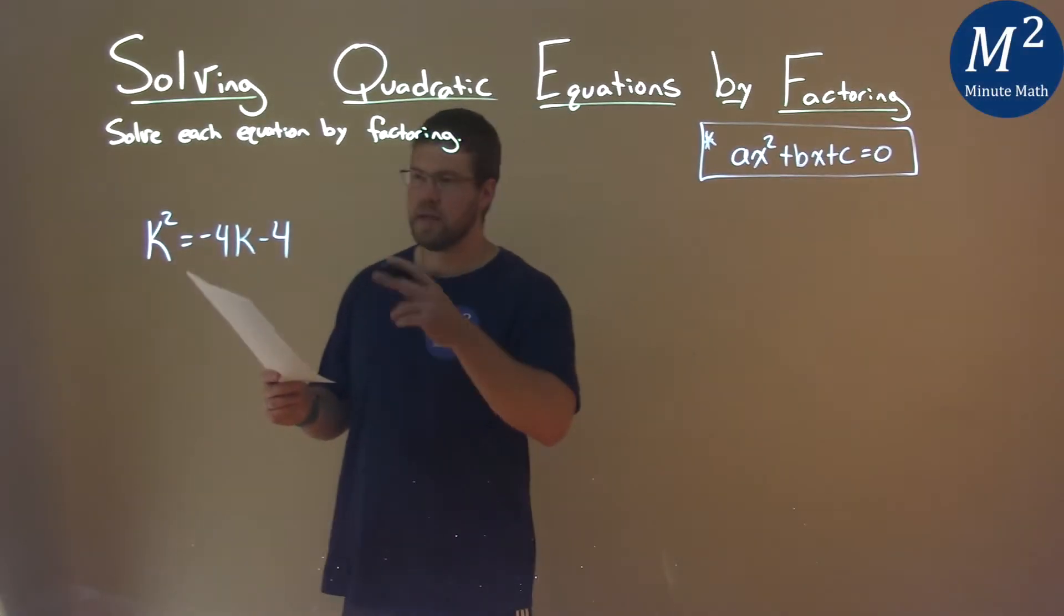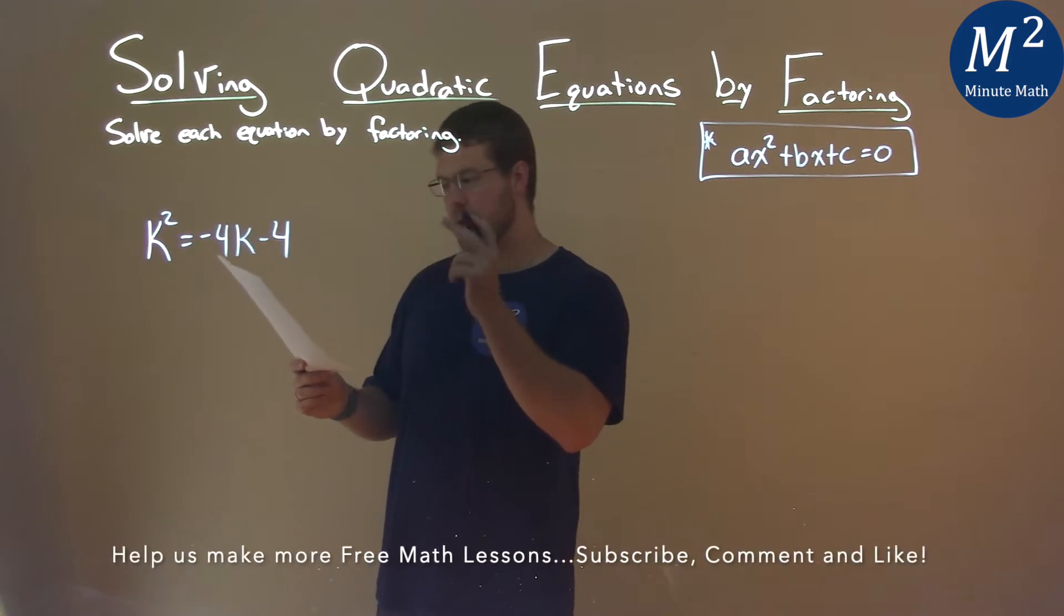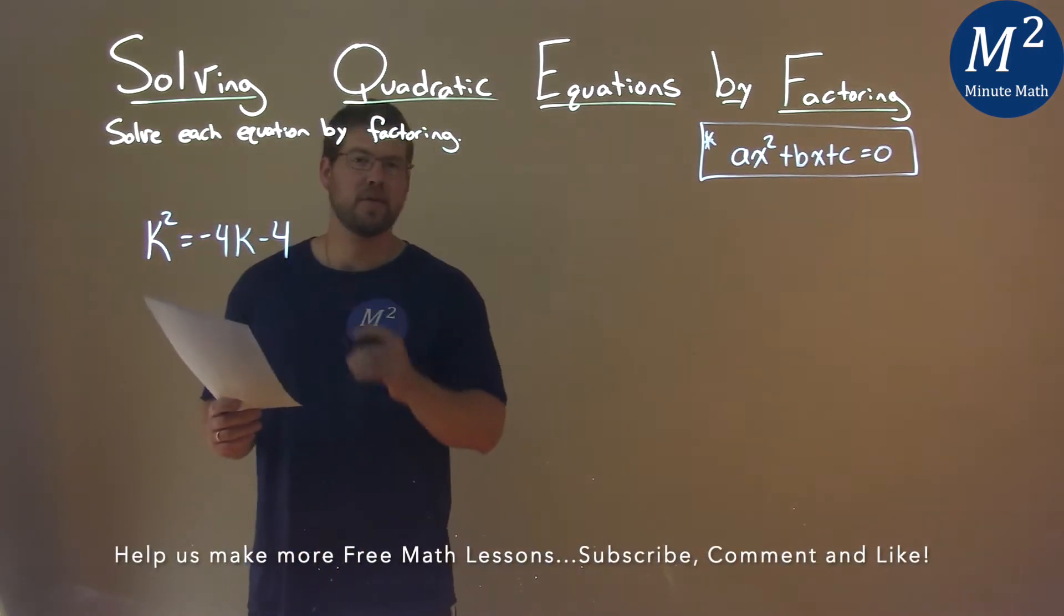We're given this problem right here, k squared equals negative 4k minus 4, and we need to solve this by factoring.